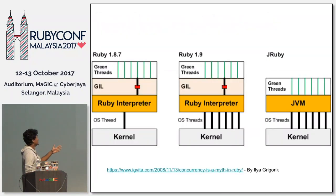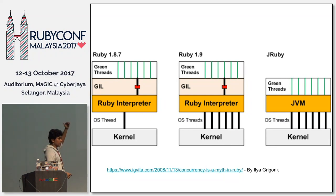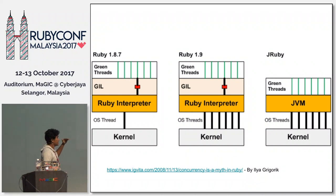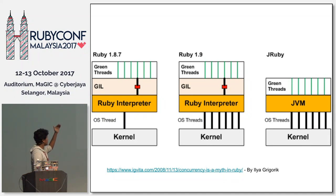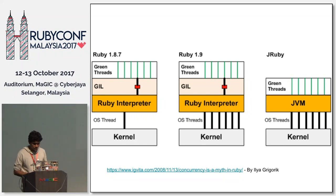This is a simple architecture showing how Ruby MRI and JRuby differ. In Ruby MRI we have threads, and before going to the Ruby interpreter we have a GIL layer — Global Interpreter Lock — which handles concurrency and only allows one thread to access the Ruby interpreter at a time, then the OS thread, then the kernel. But JRuby doesn't have anything like GIL; it connects directly from the green thread to the JVM and OS threads.